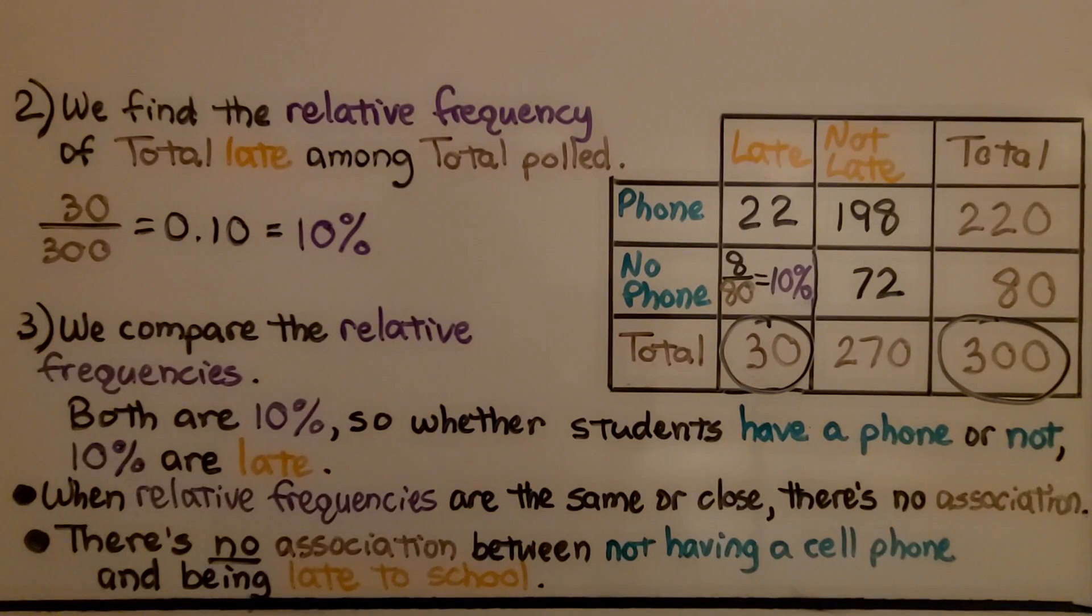We compare the relative frequencies, both are 10%. So whether the students have a phone or not, 10% of the students are late. When relative frequencies are the same or close, there's no association. So there's no association between not having a cell phone and being late to school.